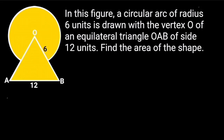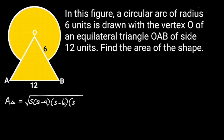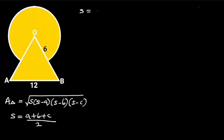From Heron's formula, the area of triangle OAB is equal to the square root of S times (S minus A) times (S minus B) times (S minus C), where S is equal to (A plus B plus C) all divided by 2, and A, B, C are the sides of the triangle. To find S: S is equal to (12 plus 12 plus 12) divided by 2. 12 plus 12 plus 12 is equal to 36, so S equals 36 divided by 2, which is 18.